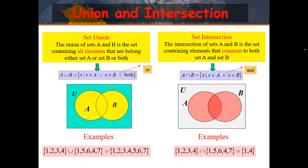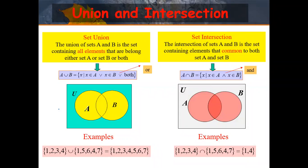I already exposed a little bit about intersection before. Okay so let's see the union first. The union of set A and B is the set containing all elements that belong to set A, set B, or both. Okay so union — union means semua, all of set A and set B.